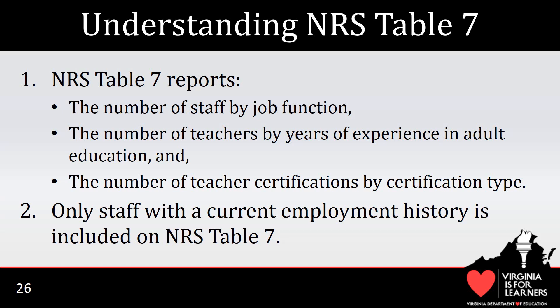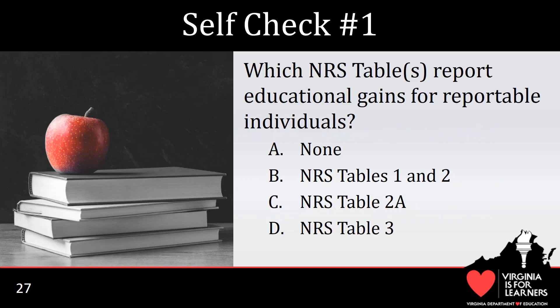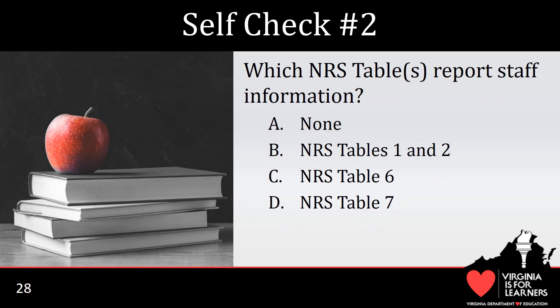This concludes the descriptions of Tables 1, 2, 2A, 3, 6, and 7. The next three slides contain questions for use as a self-check. Which NRS Tables report educational gains for reportable individuals? The answer is A — none of the tables report educational gains for reportable individuals. Which NRS Tables report staff information? The answer is D — NRS Table 7.